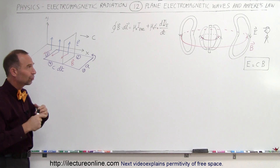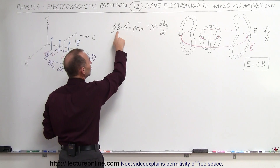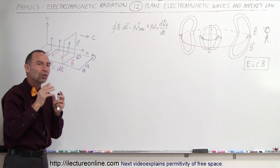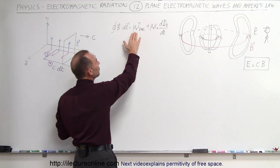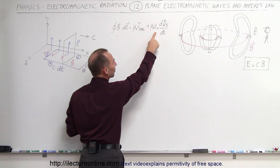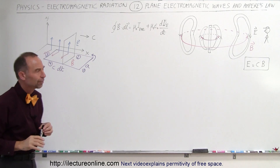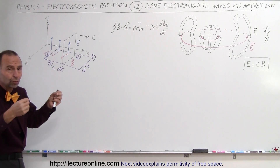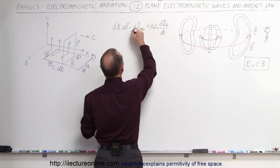Now, what we're doing here is we're using Ampere's Law, which says that if we do a closed-loop integral of the strength of the B field times the path length in the direction of that path, that should equal μ₀ times the current enclosed plus μ₀ε₀ times the change with respect to time of the flux of the electric field. What we don't have here is any currents, so that term simply goes to zero.